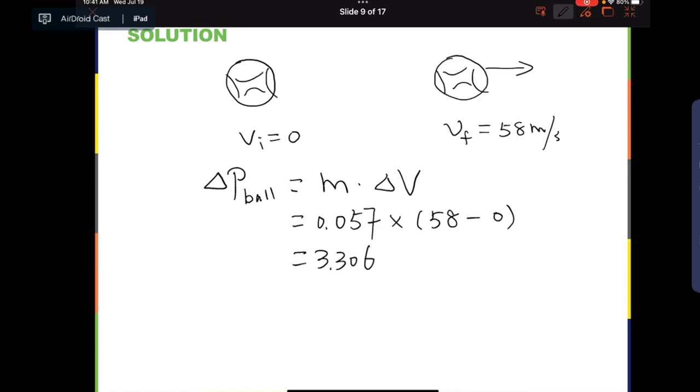So this calculation has a result of 3.306. For the same reason, we have to use only two significant figures. That's why the answer should be 3.3 kg meters per second. Now this is only the change in momentum.